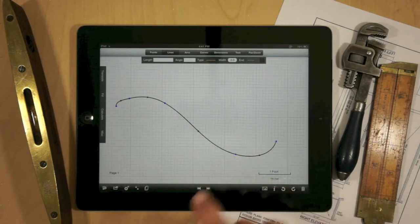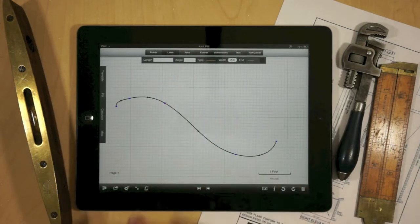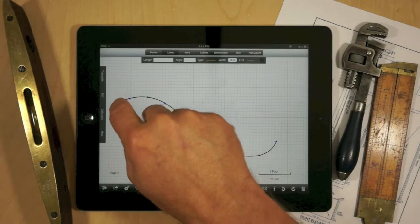To delete a Bezier curve segment, just go to lines mode and double tap on the center purple segment.